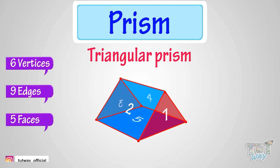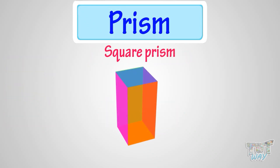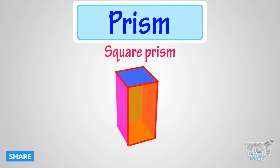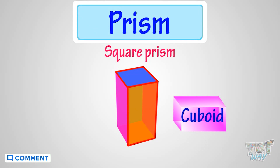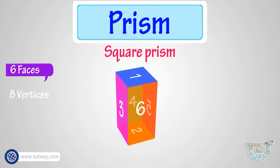Now let's learn another type of prism. This is a square prism, because its top and bottom faces are square in shape and all other faces are rectangular. This is the same as a cuboid, so it has 6 faces, 8 vertices, and 12 edges.